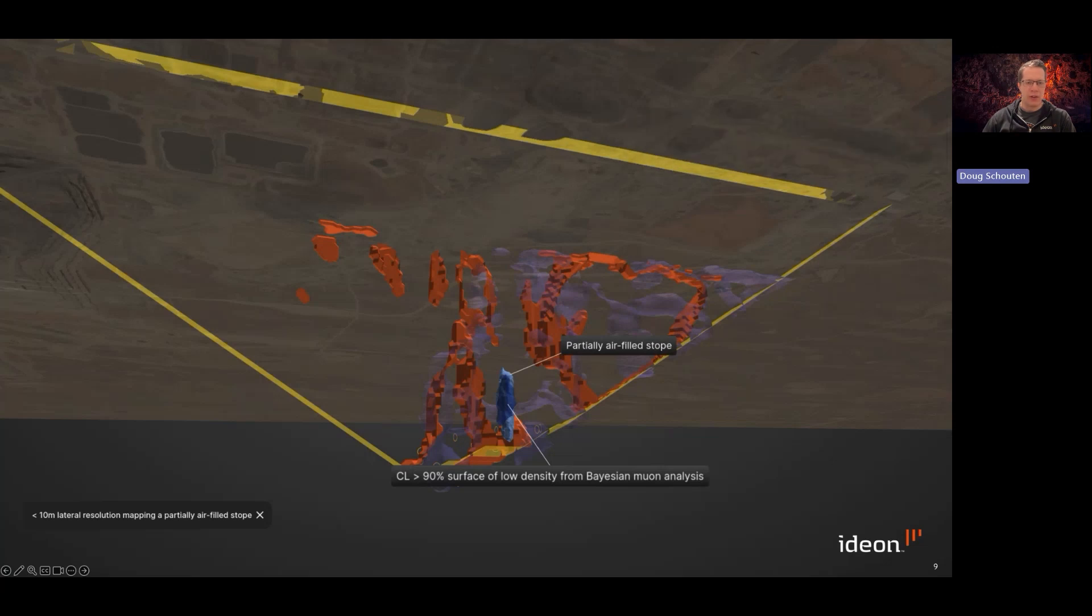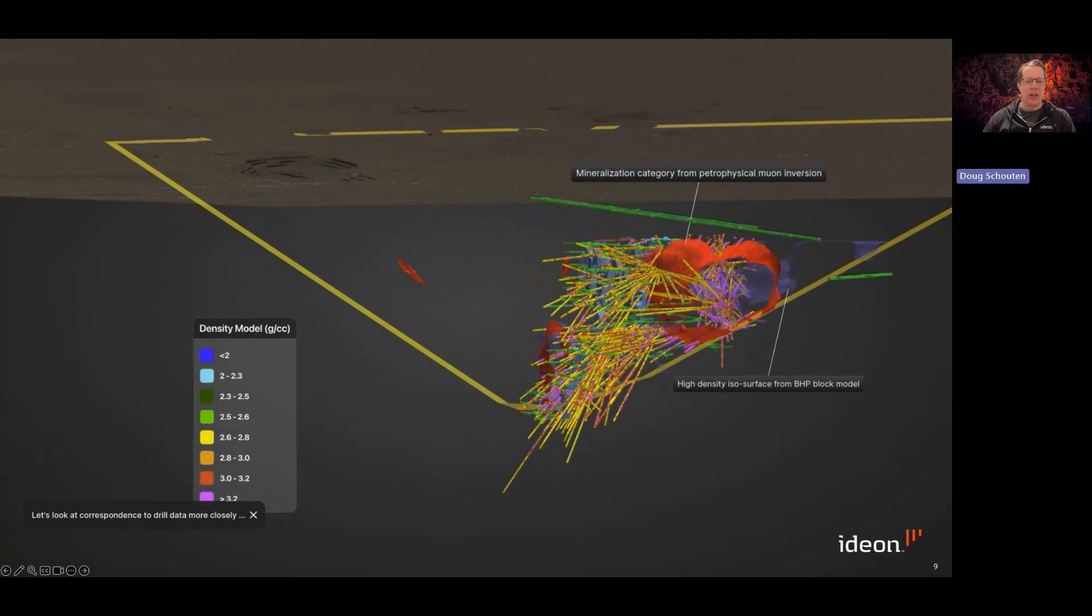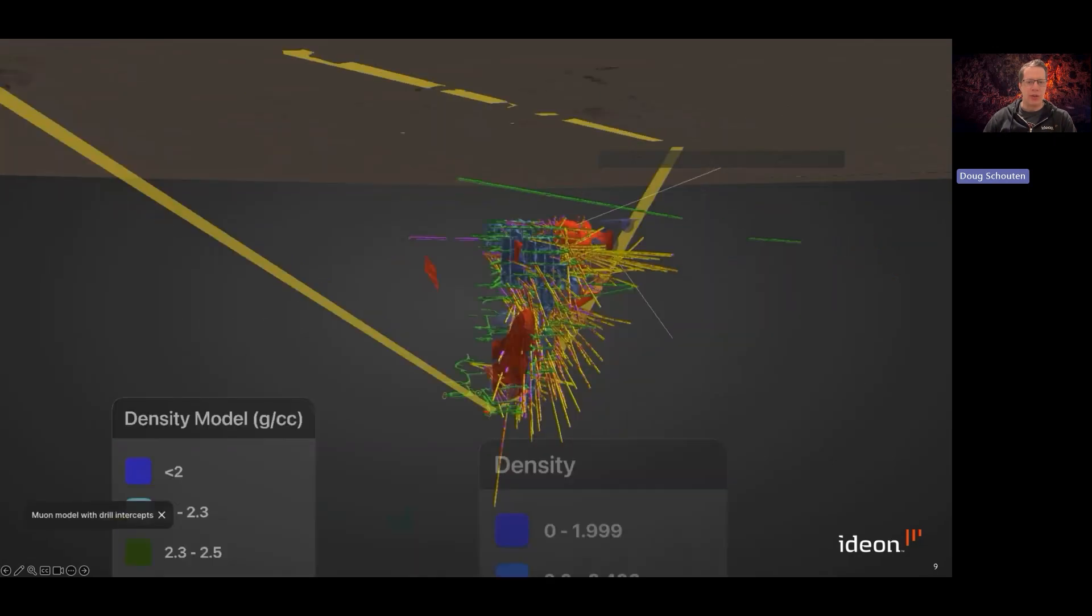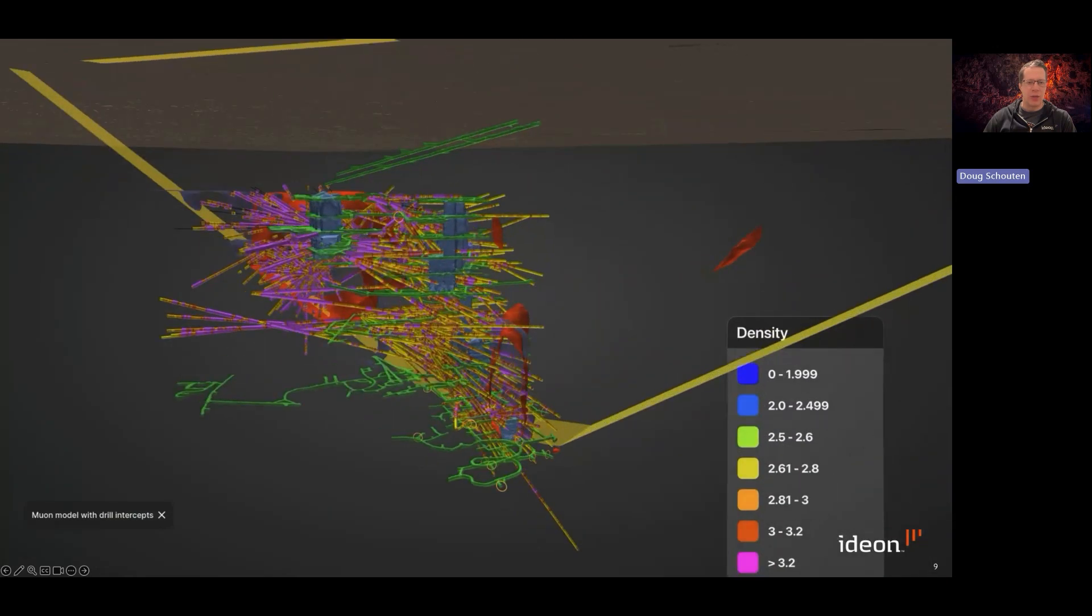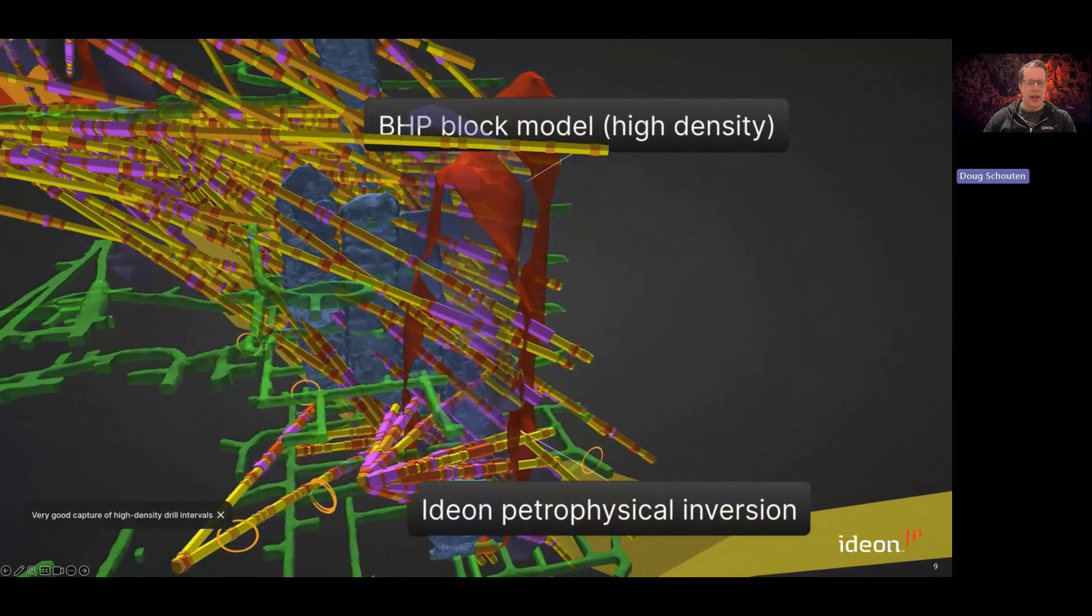We can also do a petrophysically constrained inversion, where instead of just mapping density, we first categorize each block of the material using the muon data as being either the hematite-rich mineralization or country rock or backfilled stope. The red surface here comprises that area of the subsurface that the muon data has described as being hematite-rich.